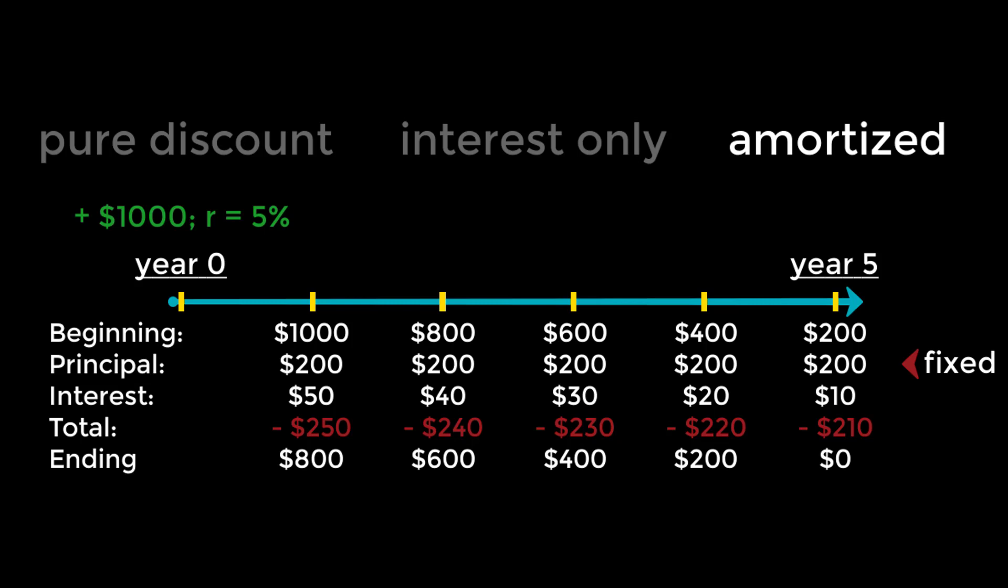The first is by making the borrower pay the interest for each period plus some fixed amount towards the principal. The second is by making the borrower pay a fixed amount each period. The first way works a little something like this. Notice how the interest payments are getting smaller each period, and thus the total payment is getting smaller each period. That's because the interest is based on the principal amount. So if we reduce the principal this period, we reduce the interest next period. Another way to think about interest is that it's the cost of using money. So obviously the more of others' money you use, the higher the price you'll have to pay, and vice versa.